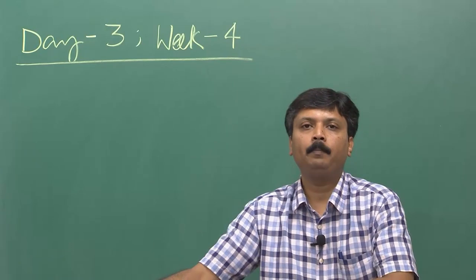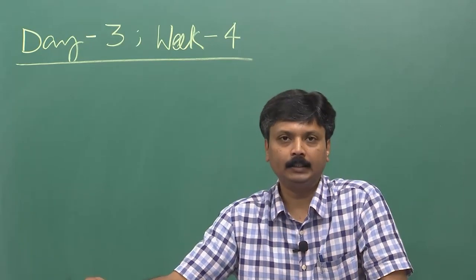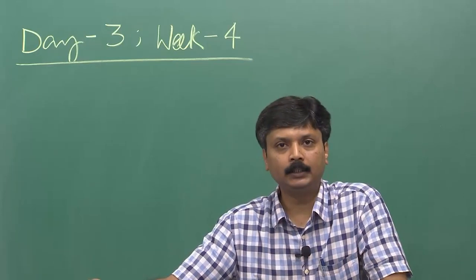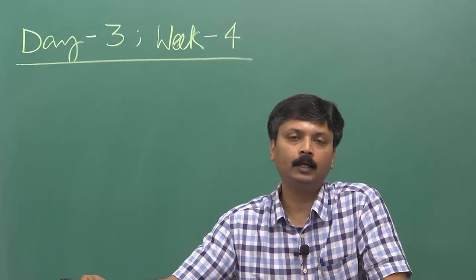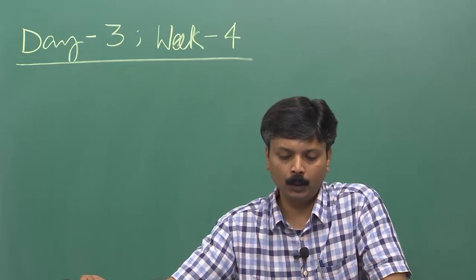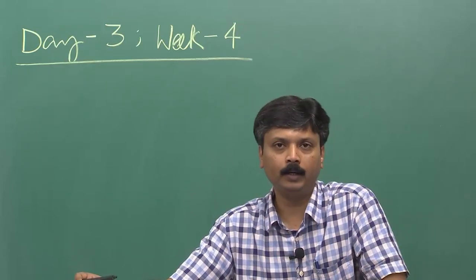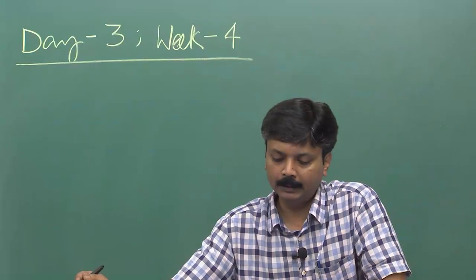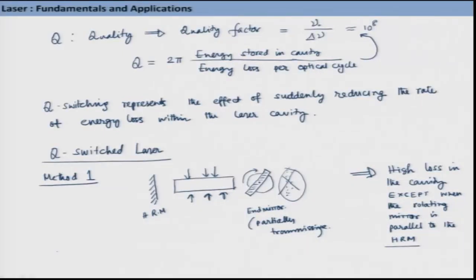Hello and welcome back. We have been discussing pulsing techniques by which one can make the laser pulsed. We have discussed cavity dumping and then started talking about Q-switching. Q-switching represents the effect of suddenly reducing the rate of energy loss within the laser cavity and then making the quality of the resonator much better.